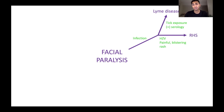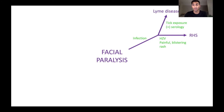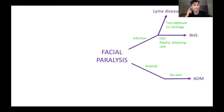But maybe the patient has a history of herpes zoster virus (HZV), and they also have a painful blistering rash on the face. In that case, we could diagnose Ramsay-Hunt syndrome (RHS) as the cause. Or maybe the patient has a gradual onset of facial paralysis over quite a period of time. If the patient is also having ear pain, then maybe the cause is acute otitis media — an ear infection that has caused subsequent damage to the facial nerve, leading to the facial paralysis.